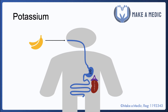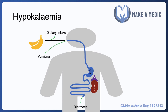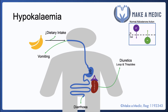First, let's talk about hypokalemia. Causes can include reduced dietary intake, loss of various fluids from the body such as vomiting or diarrhea, and issues with potassium excretion. The use of diuretics, in particular loop and thiazide diuretics, can facilitate the excretion of potassium in the urine.